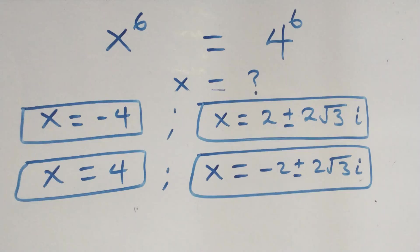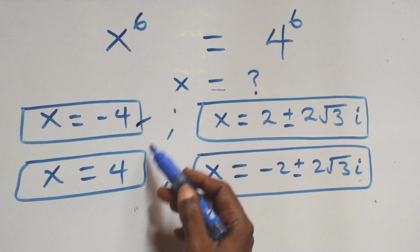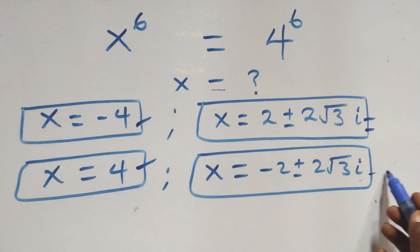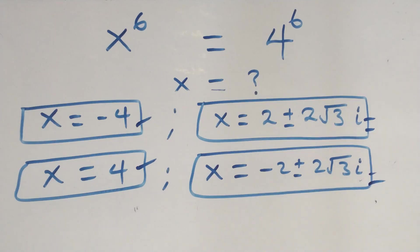Therefore, all together in this problem we have six solutions: two real solutions and two complex solutions from each case, giving four complex solutions total. Thank you for watching. Don't forget to subscribe for more videos and turn the notification bell on. Share this video with a thumbs up and put your comment. See you next class, bye for now.